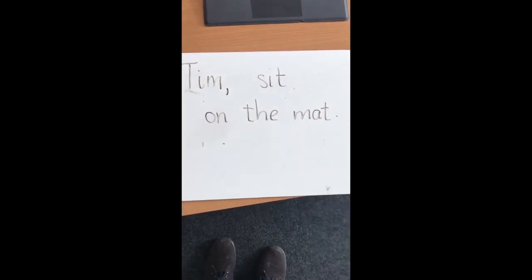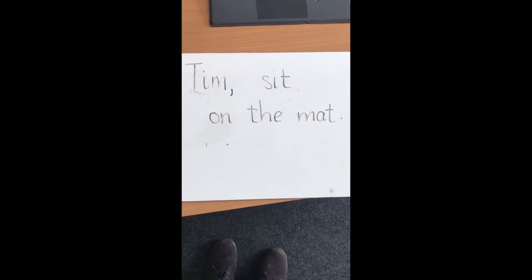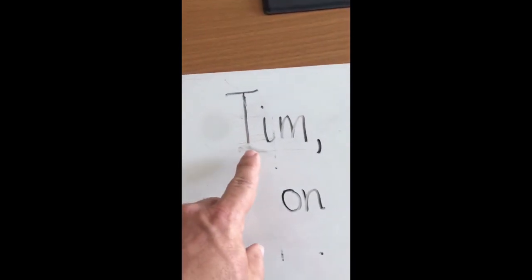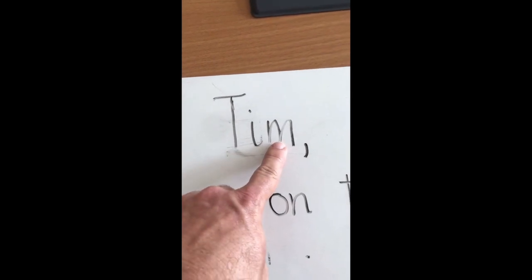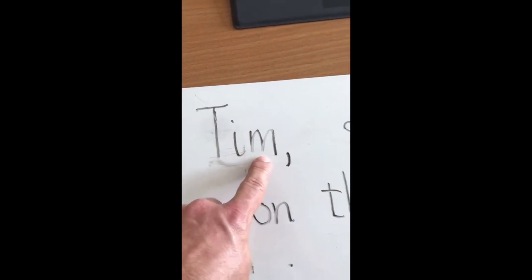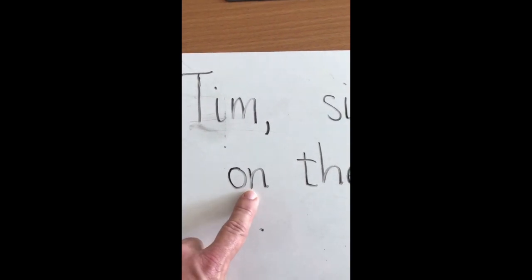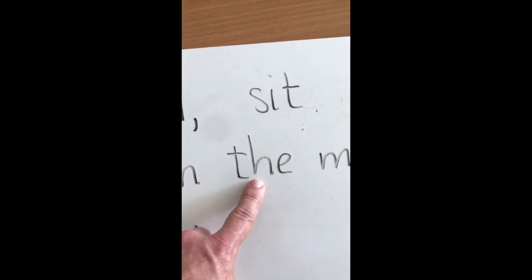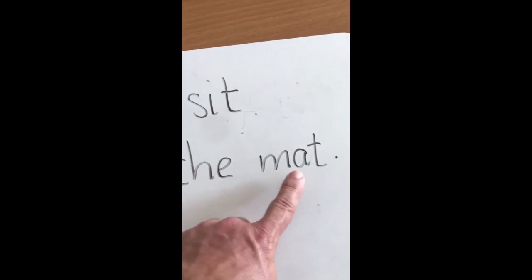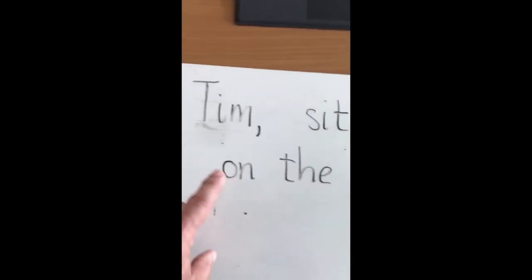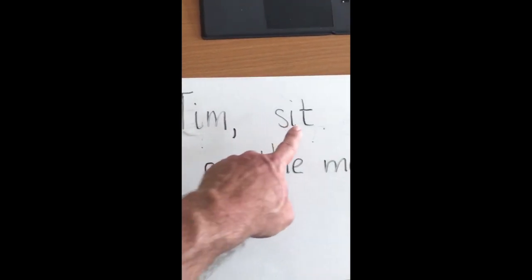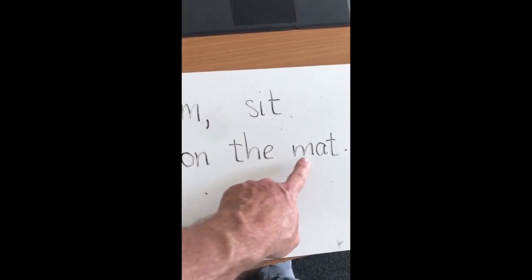I've written a sign for Tim now. Let's see if we can read it. Here's the sign. Let's try the words one at a time. T, I, N — Tim. S, I, T — Sit. O, N — On. Tricky word: The. N, A, T — Mat. Tim. Sit. On. The. Mat.